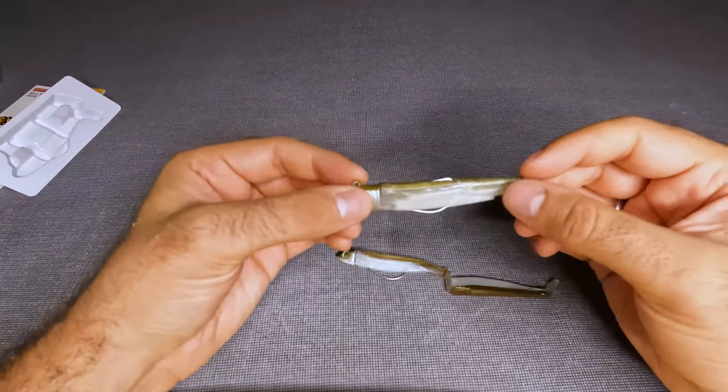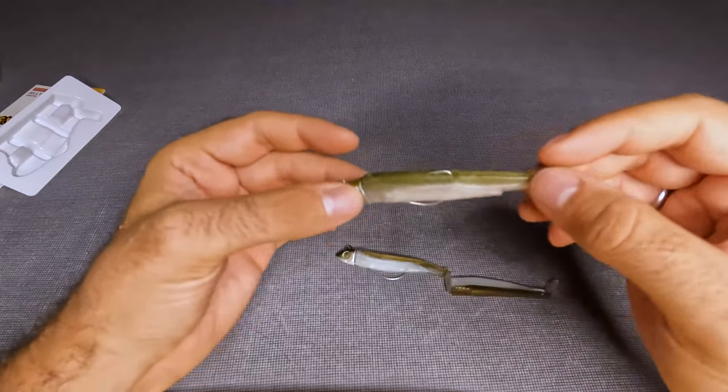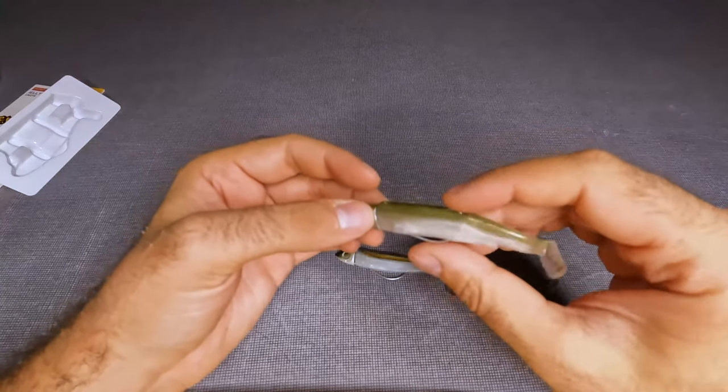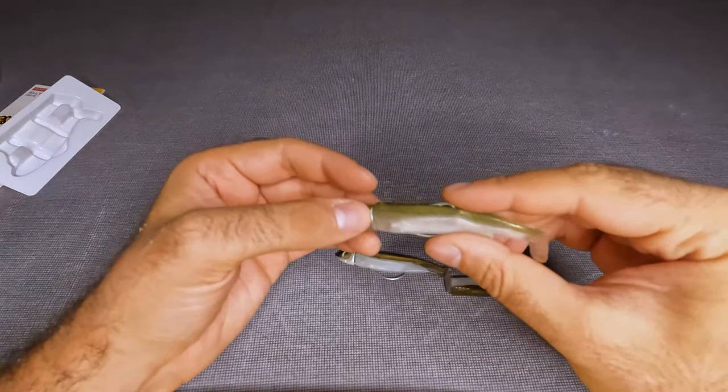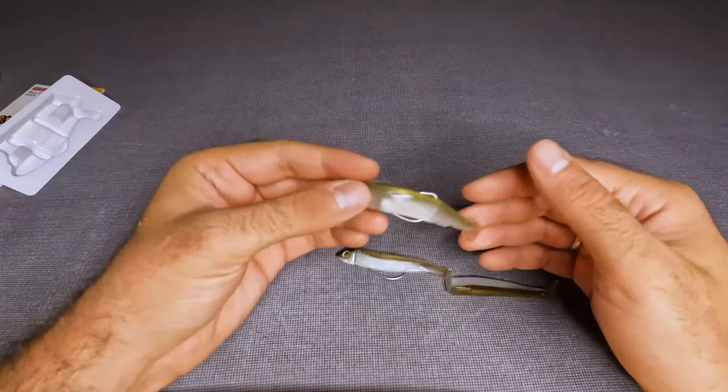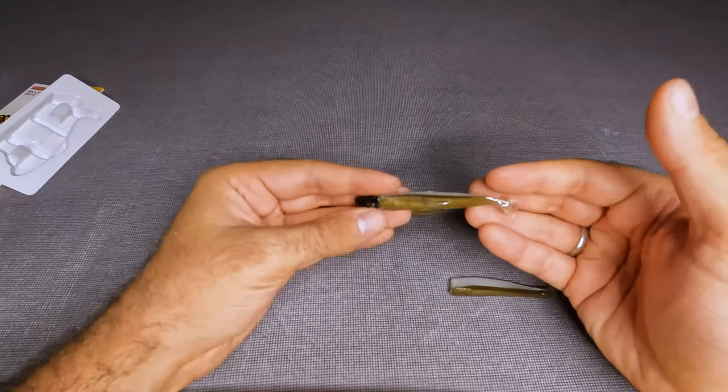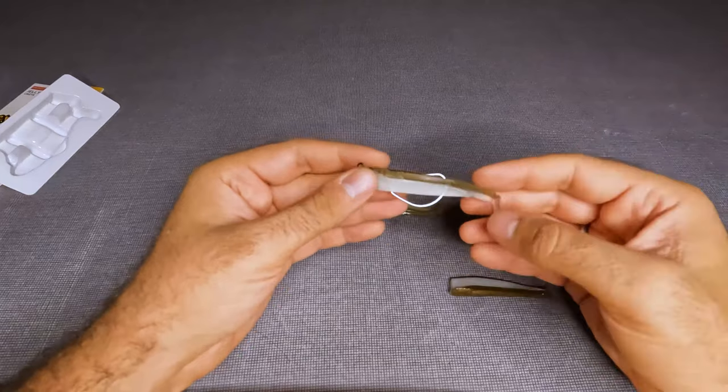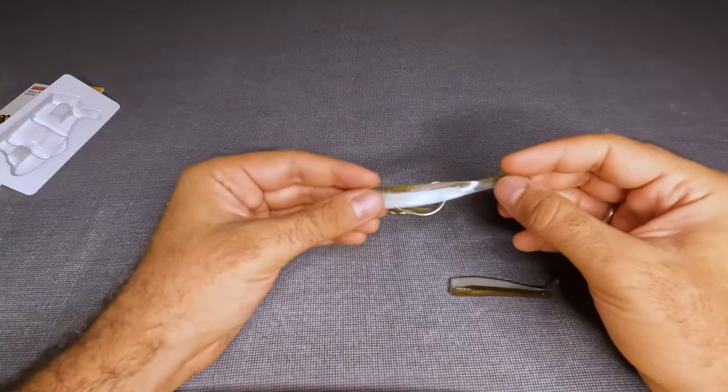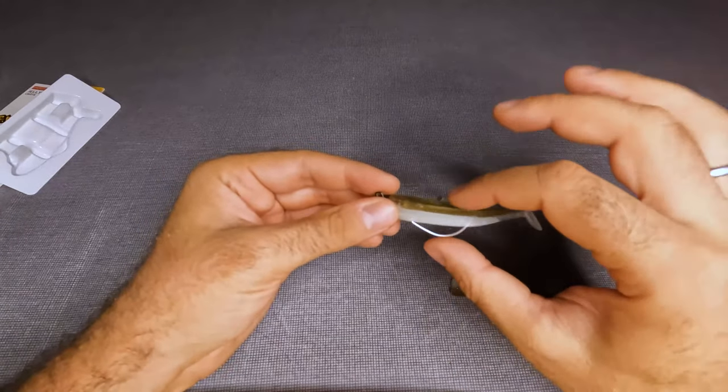You can see on the original fish the hook is way better hidden inside the body and I would say that this is very important for the play of this lure in the water. I will make video later on today how this one behaves in the water and we'll see the difference but my initial feeling is that I'm not gonna like this big hook.